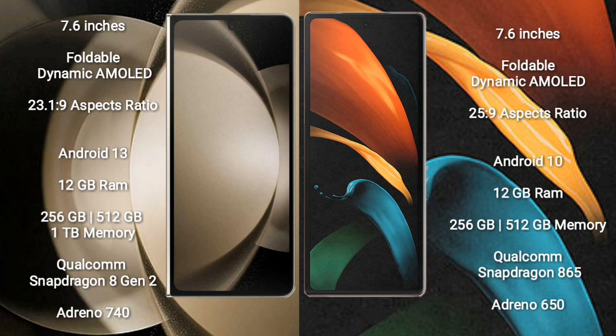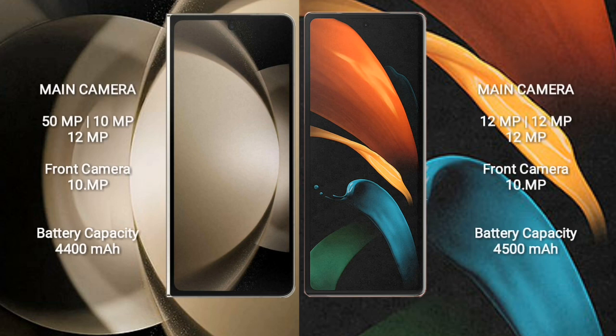Samsung Galaxy Z Fold 5 comes with 12GB RAM and 256GB, 512GB, or 1TB internal storage, Qualcomm Snapdragon 8 Gen 2 processor and GPU Adreno 740. Samsung Galaxy Z Fold 2 comes with 12GB RAM and 256GB or 512GB internal storage, Qualcomm Snapdragon 865 processor and GPU Adreno 650. Samsung Galaxy Z Fold 5 features a triple camera setup: 50MP plus 10MP plus